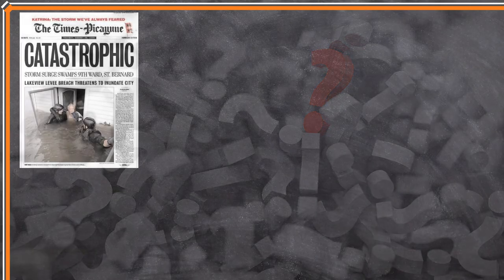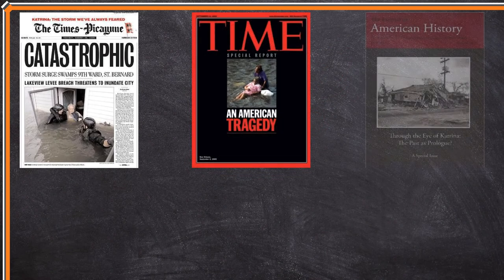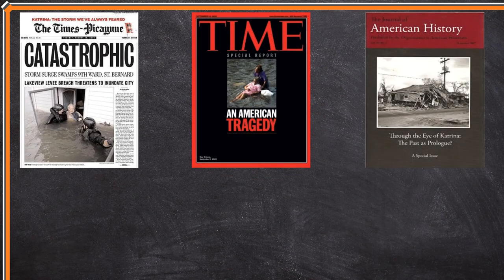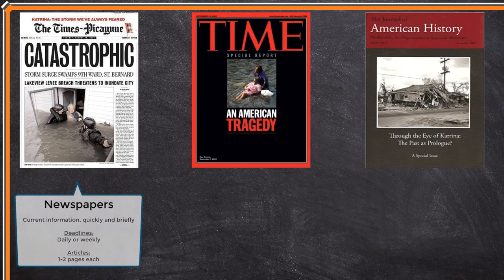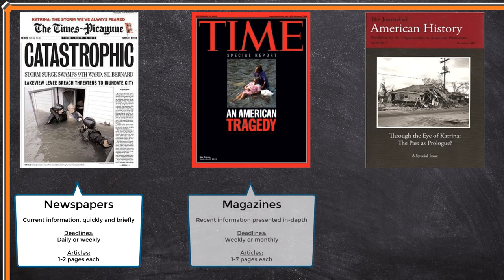So, why is the information cycle important? Knowing the cycle will help you know what information you can successfully find on a topic. Let's say you had to write a paper on Hurricane Katrina just weeks after it happened. At that time, you would have been able to find information published in websites, newspapers, and magazines, because these publications focus on recent information.